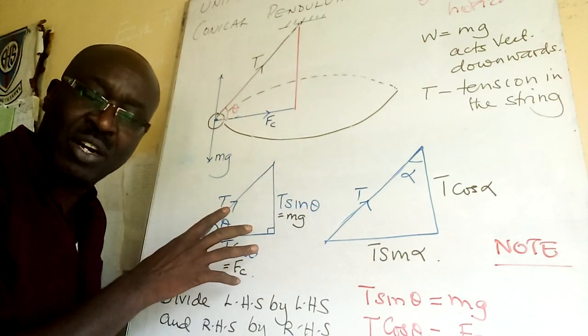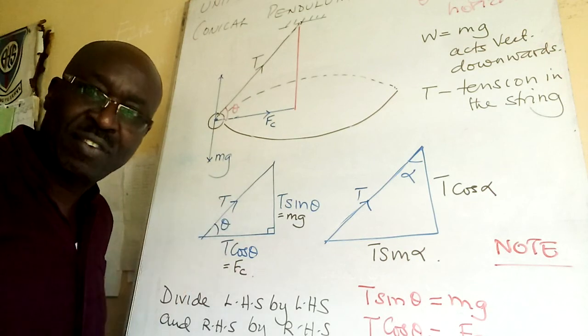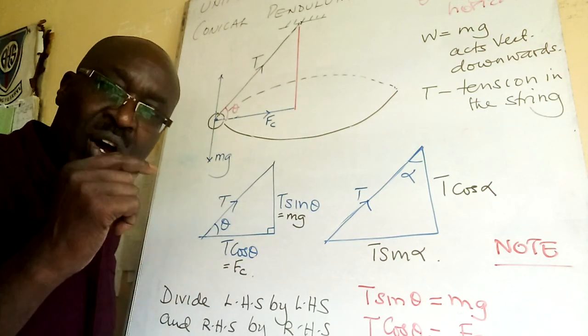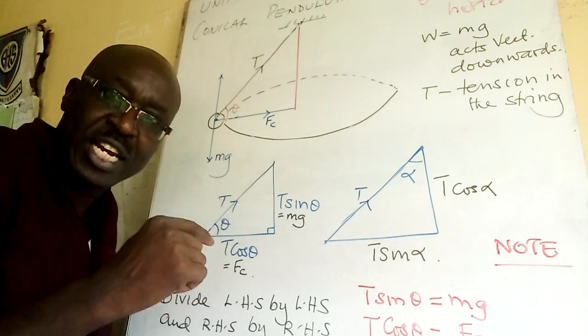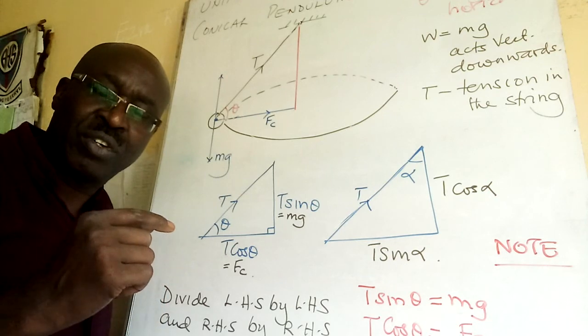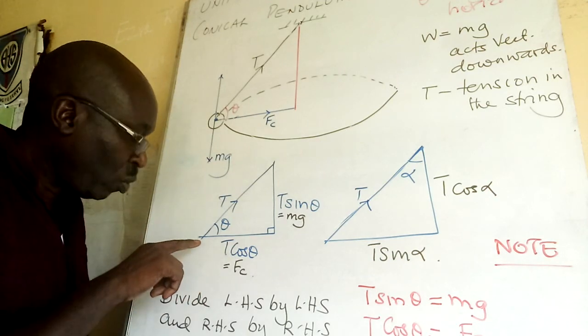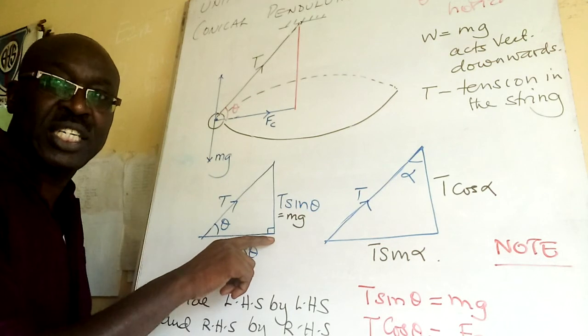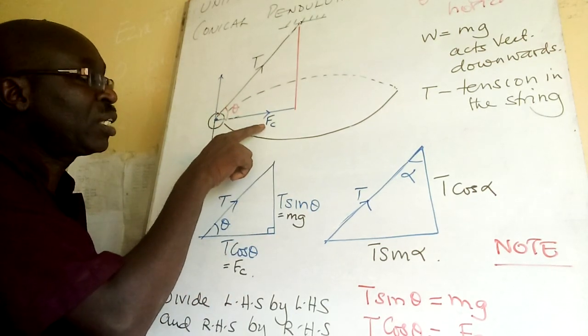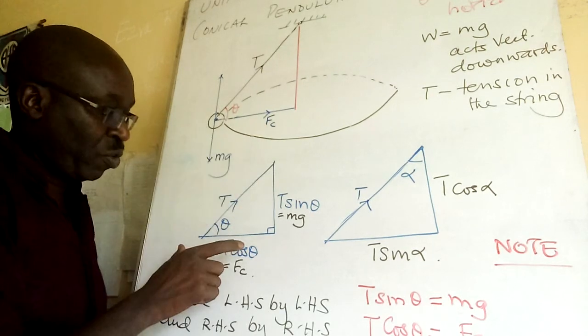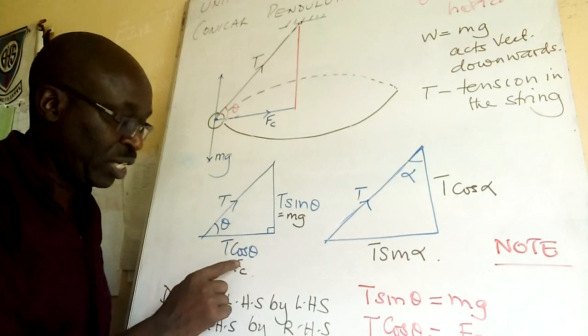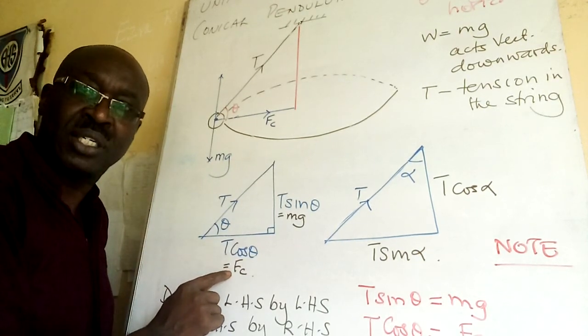In that right angle triangle every side I have described what type of force. Now forces in this triangle in relation to our topic of circular motion, the force that is directed towards the center is known as centripetal force. Therefore in my triangle I also equate T cos theta as centripetal force.